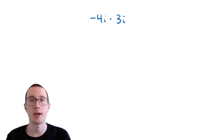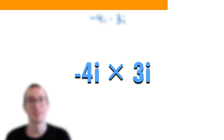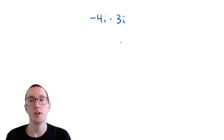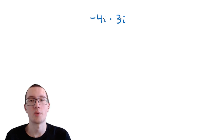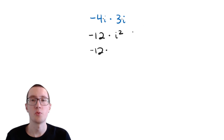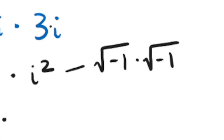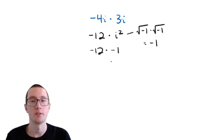Here's another example: we need to multiply two imaginary numbers. We have negative 4i times 3i. Since everything is being multiplied, we can multiply the numbers together and the i's together. Negative 4 times 3 is negative 12, and i times i is i squared, which equals negative 1. So we have negative 12 times negative 1. Two negatives make a positive, and 12 times 1 is 12, so our final answer is 12.